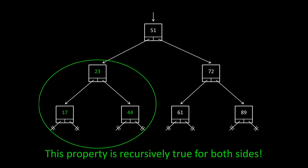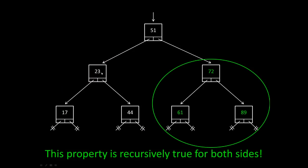And what's interesting is this property is recursively true for both sides. If you look at this left subtree, you'll see that all of these values are less than the 51. And inside this subtree, you can see that the 17 is less than the 23, and the 44 is greater than or equal to the 23. The same thing is true for the right subtree. All of these values are greater than or equal to the 51. The 61 is less than the 72, and the 89 is greater than or equal to the 72.